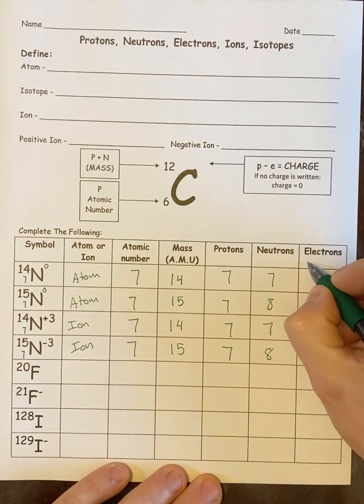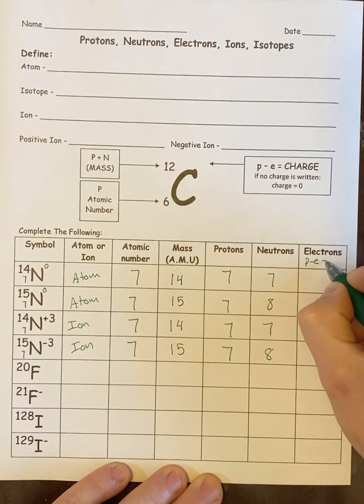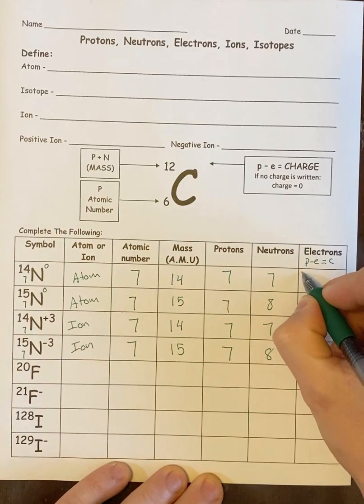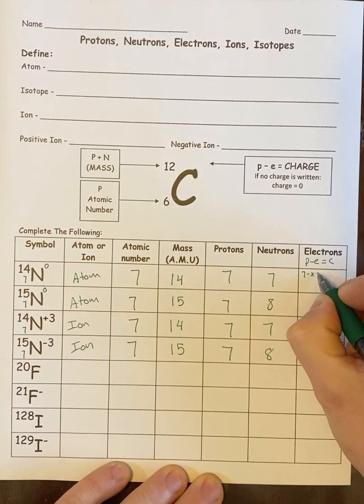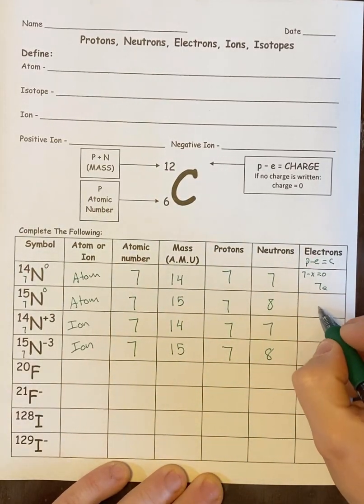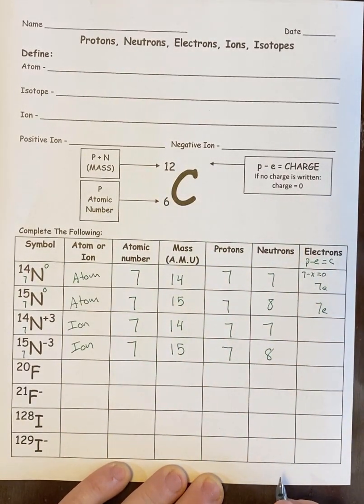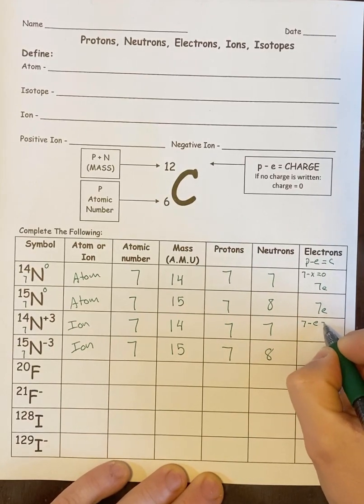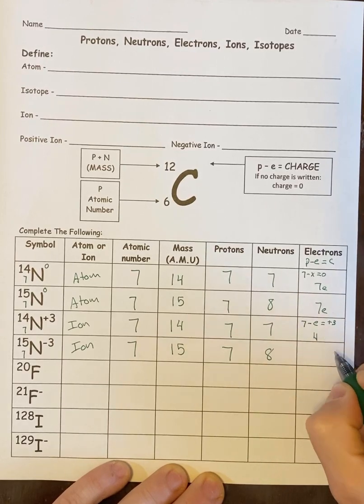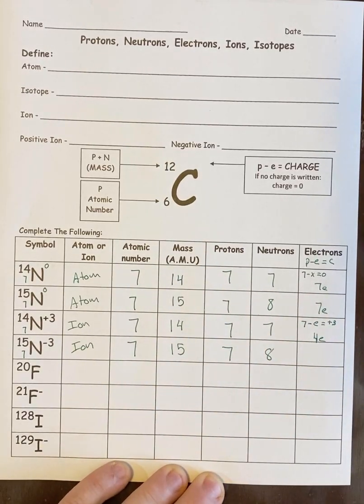And the last one, electrons. Remember, P minus E equals C. So for this one, I'll do the whole thing. 7 minus electrons equals 0, so 7 electrons. In this one, it's also going to be 7 electrons. It's the same problem. In the next one, 7 minus the electron number equals plus 3. So that means I have 4 electrons.